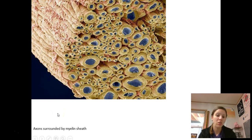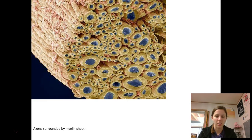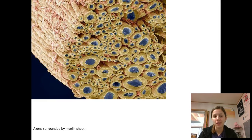Some interesting things about the myelin sheath: if you don't have myelin sheath, that slows down your neural processing so much. In fact, multiple sclerosis literally means the degeneration of the myelin sheath, and that is what people struggle with when they have that disease.